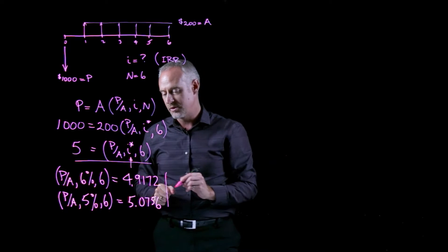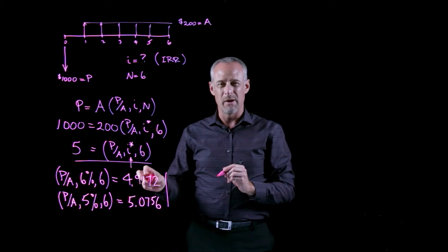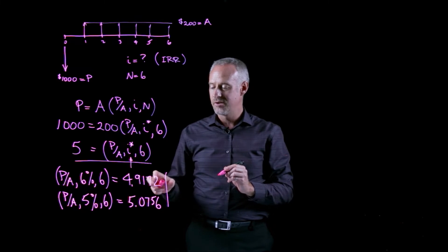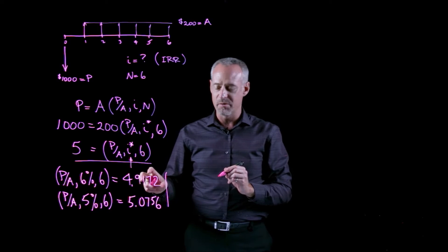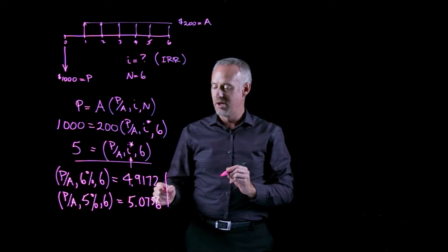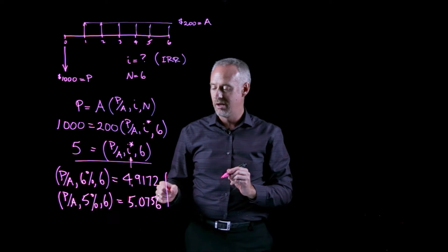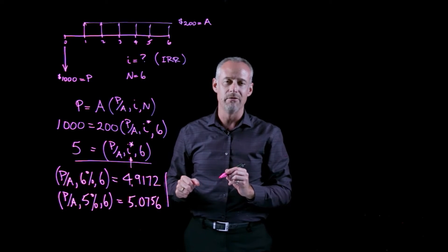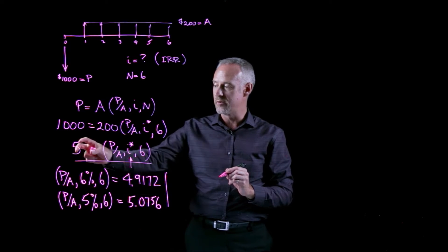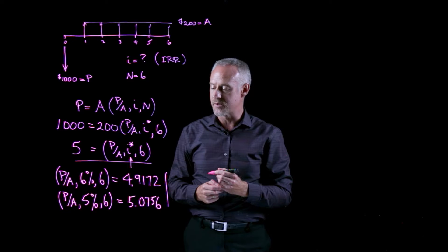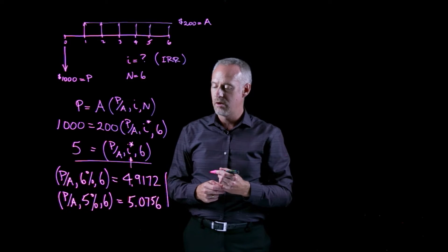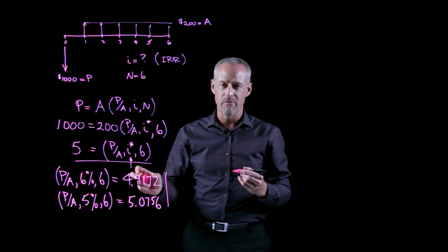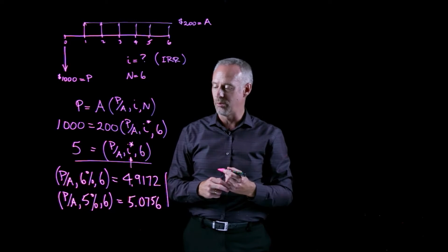If I look at these two numbers, they're both about the same distance from a value of five. So if I wanted to make an intuitive guess, I could say probably I'll end up with a value somewhere around 5.5, or halfway between 5% and 6%, as the value that gives me something close to 5. But we can use a technique that assumes a linear relationship between our interest rate and the value of the compound interest factor — this is called linear interpolation.